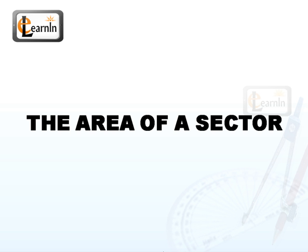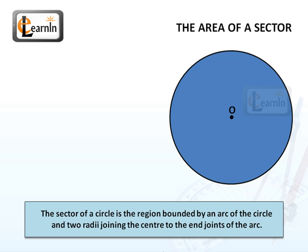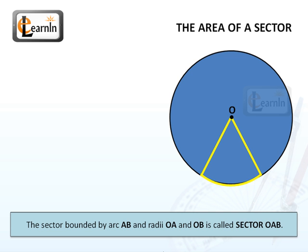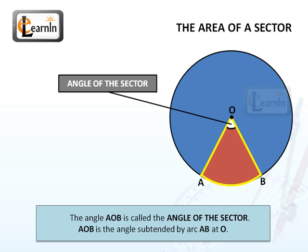The area of a sector. A sector of a circle is a region bounded by an arc of the circle and two radii joining the center to the end points of the arc. In the figure, the sector bounded by arc AB and radii OA and OB is called the sector OAB. The angle AOB is called the angle of the sector. We can also say that AOB is the angle subtended by the arc AB at O.